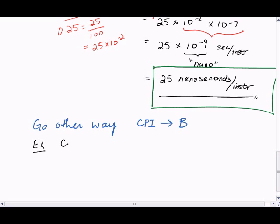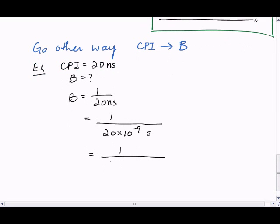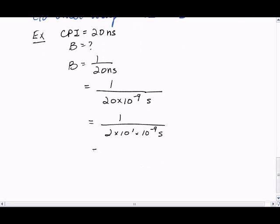Suppose the cycles per instruction is 20 nanoseconds, what is the B? B equals 1 over 20 nanoseconds. So we will rewrite our nanoseconds in terms of seconds. So nano is 10 to the minus 9. We can further rewrite our 20 as 2 times 10 to the 1 times 10 to the minus 9, which we can further rewrite as 1 over 2 times 10 to the minus 8.